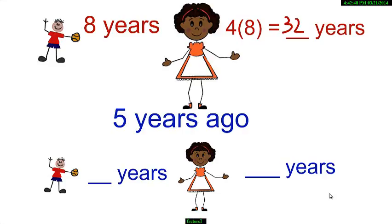Now, let us check whether this answer is correct. 5 years ago her brother was 8 minus 5 that is 3 years. 5 years ago, Reno was 32 minus 5 that is 27 years. Isn't 27 equal to 9 into 3?